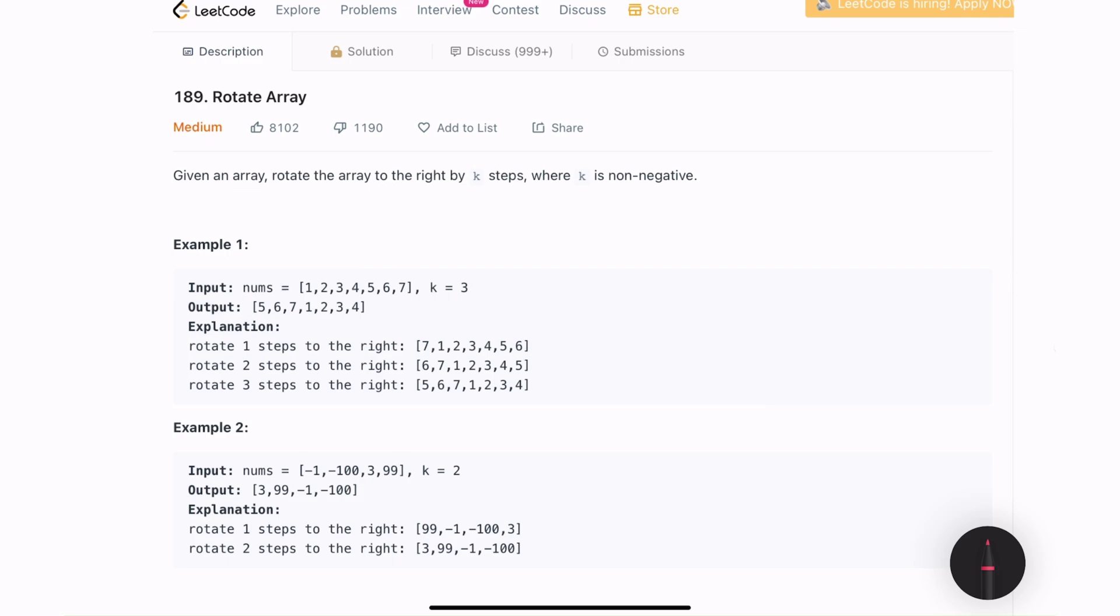Hello everyone, in this video we will be solving problem 189, rotate array. The problem statement is, we are given an array and we need to rotate it to the right by k steps where k is a non-negative number.